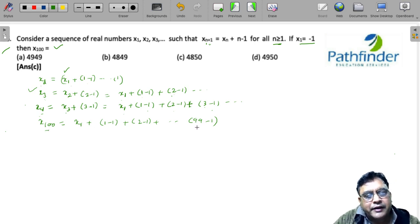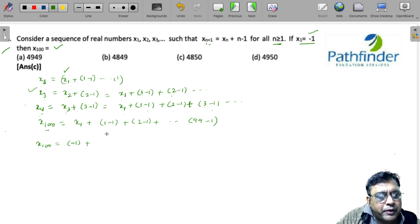So x100 is -1, which is the value of x1 given to you, plus... Now you can either calculate this straight away as 0 + 1 + 2 till 98, or you can say that this is the sum of numbers from 1 + 2 + 3 and so on till 99.